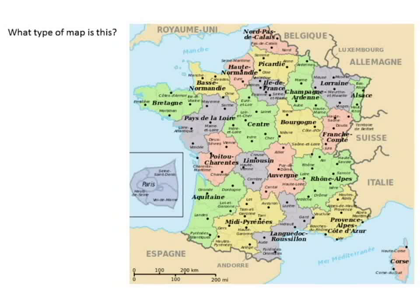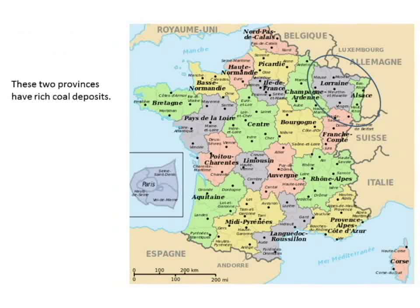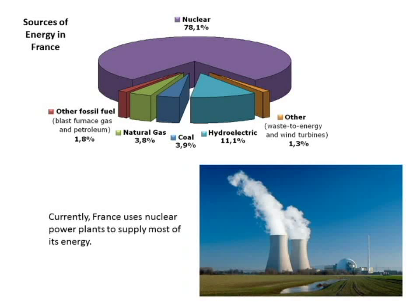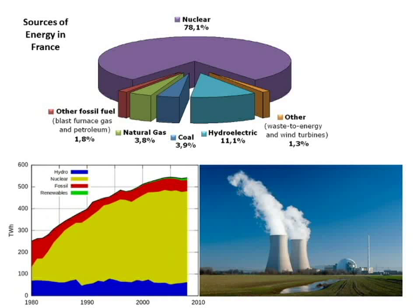This is a political map - it shows the provinces of France. There's Alsace and Lorraine with their rich coal deposits. Sources of energy in France: the major source of energy is nuclear. The second biggest source is hydroelectric - that's where they put dams on rivers or other reservoirs, and the water flows through the dam and turns turbines. France has used nuclear power to supply most of its energy and it doesn't seem like it's going down. Hydro stays the same.